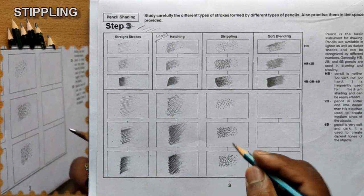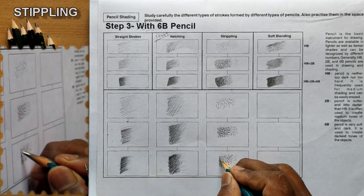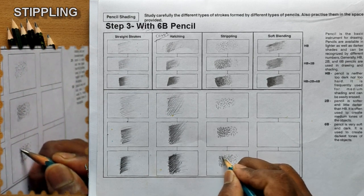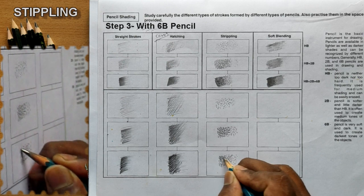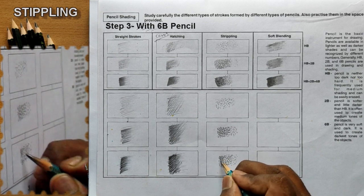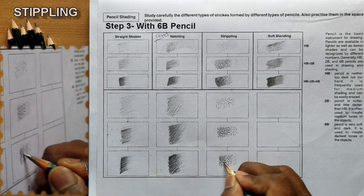For the third step, take a 6B pencil, reduce the gap between the dots further, and place them very closely. As you are using a 6B pencil you will get a very dark shade.